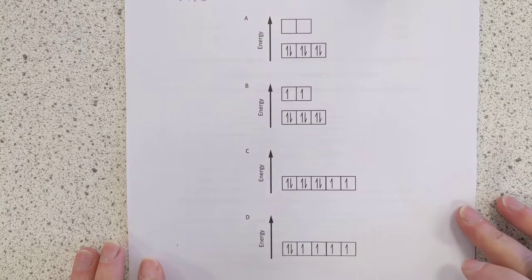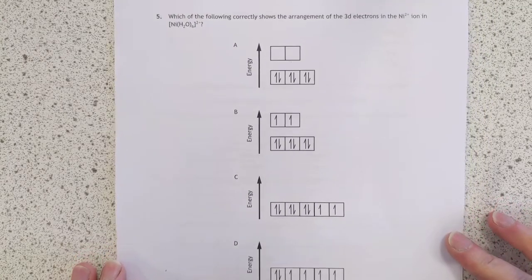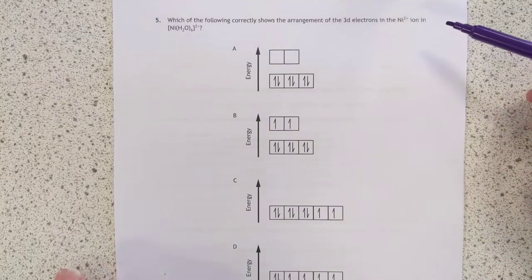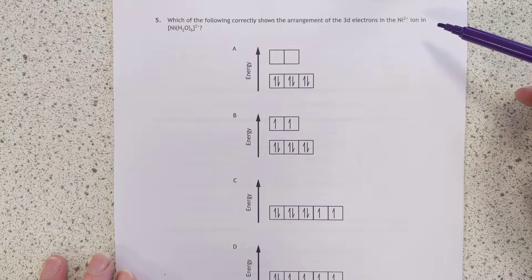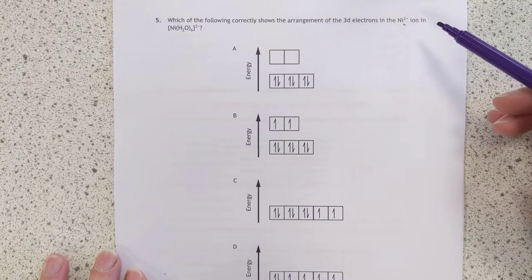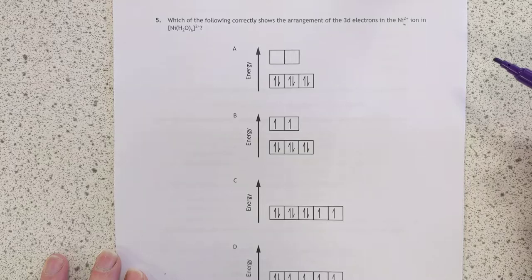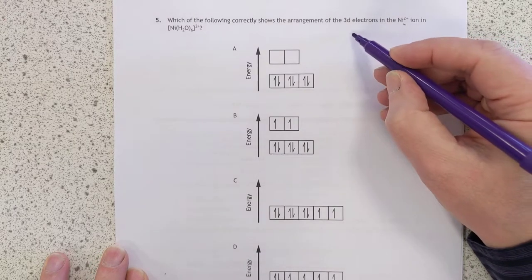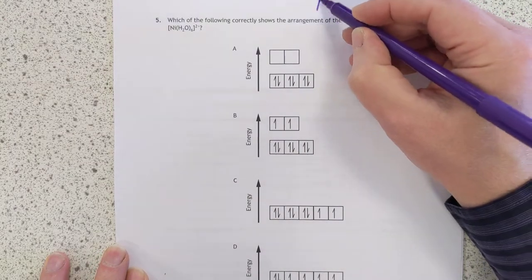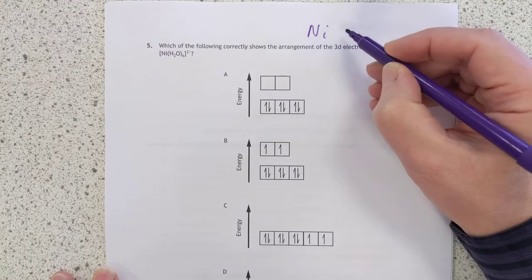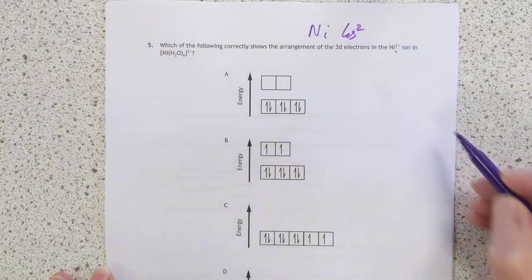Number five, can't really, can we fit this on? Yeah, sort of. Let's have a look. Which of the following correctly shows the arrangement of three D electrons in a nickel two plus ion in this? Well, nickel is, or was, nickel zero, no charge, was 4s2.